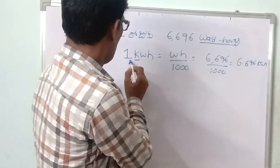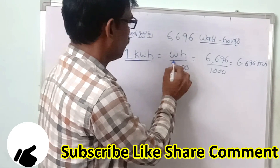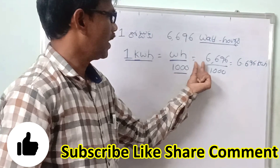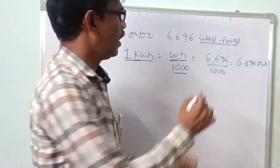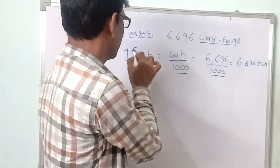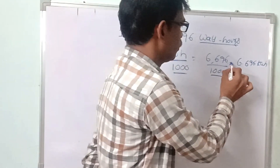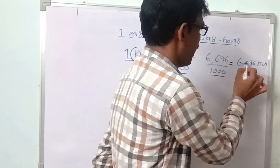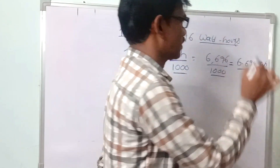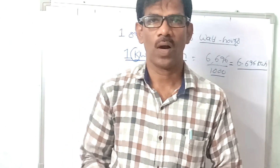To recap: 1 kilowatt-hour is equal to watt-hours divided by 1000. Kilo means thousand. So the total watt-hours divided by 1000 gives you kilowatt-hours — that is the number of units consumed.